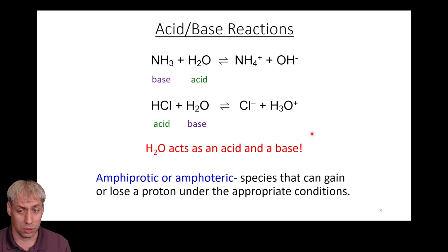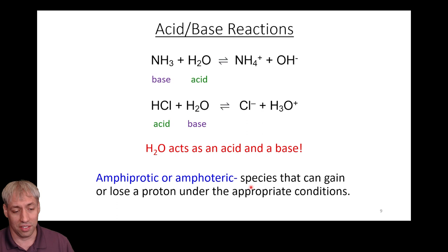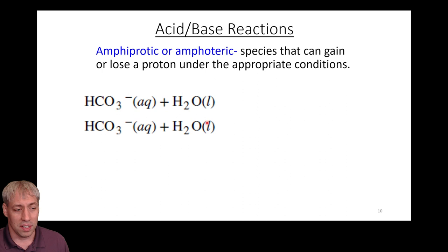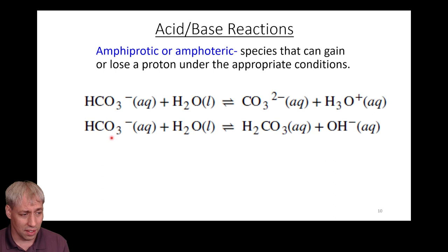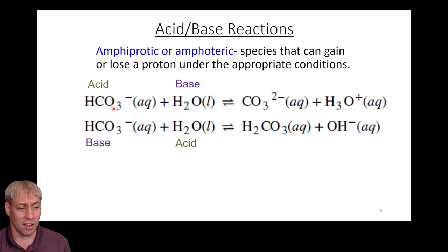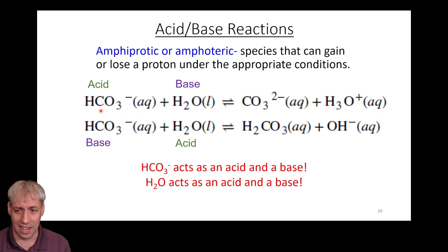Species that can gain or lose protons are called amphiprotic or amphoteric species. They can act as an acid or a base depending on conditions — gaining protons under acidic conditions and losing protons under basic conditions. For example, HCO3- plus H2O can go two ways: HCO3- can act as the acid producing CO3^2- (its conjugate base) and H3O+, or HCO3- can act as the base to generate H2CO3 (its conjugate acid) with OH- as the conjugate base of H2O. Both equilibria occur simultaneously, with one being more favorable depending on the pH.